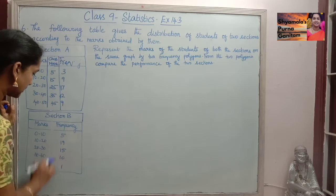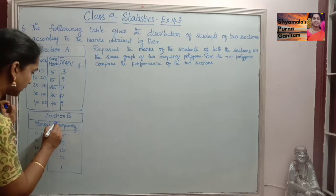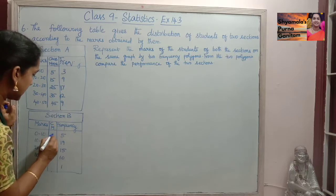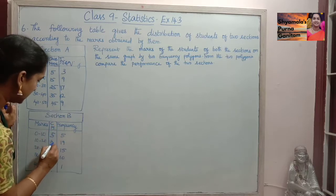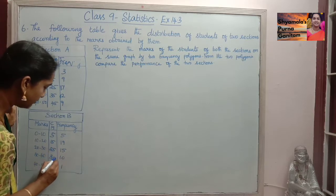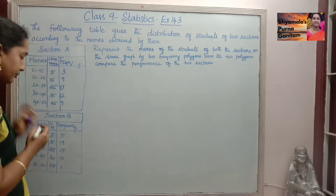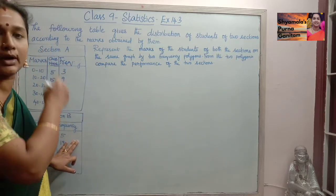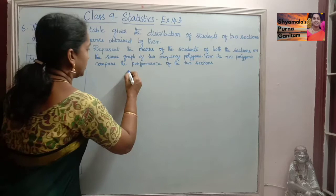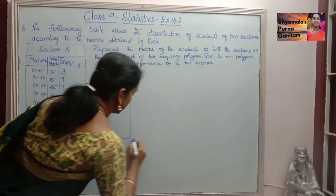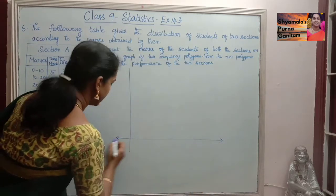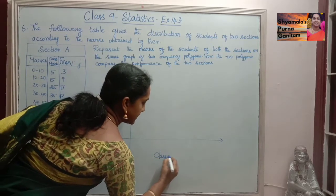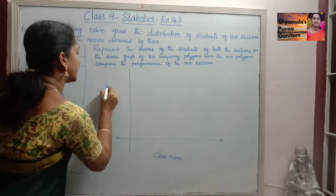The same class marks — 5, 15, 25, 35, and 45 — apply for Section B as well. We will take the class mark on the x-axis and frequency on the y-axis to plot the frequency polygon.